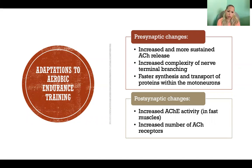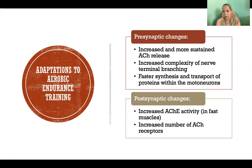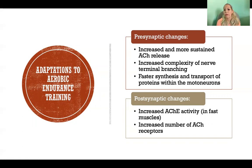With aerobic endurance training, we start to see adaptations in the neuromuscular junction that allow for longer, more sustained contractions, as are required in aerobic endurance training compared to faster movements or more intermittent activity. We see more sustained acetylcholine release so that we can have more sustained contraction.